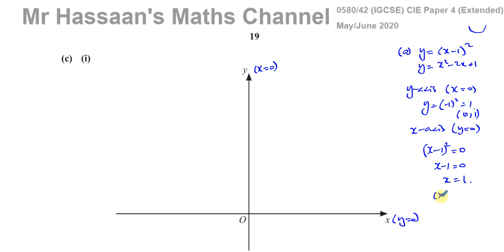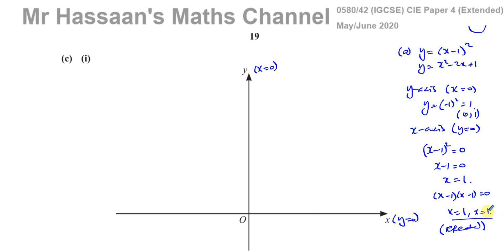You can think of this as x minus 1 times x minus 1 equals 0, giving x equals 1 twice. This is called a repeated root. When you have a repeated root, the graph actually turns on the x-axis at that point. So this graph crosses the y-axis at y equals 1, and it turns on the x-axis when x equals 1. It's going to have this type of shape.